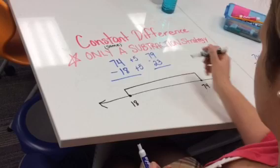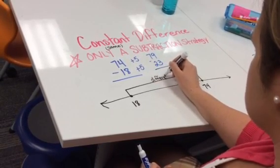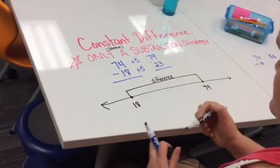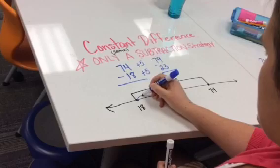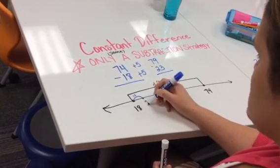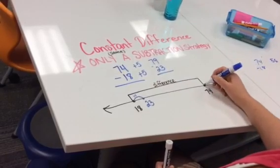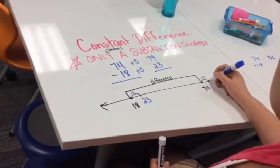This line represents the difference that exists between these two numbers. If I add 5 to 18, I'm going to get a new spot, 23. And if I add 5 to 74, I get 79.